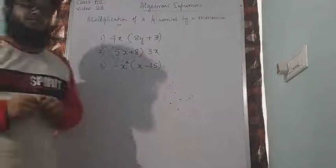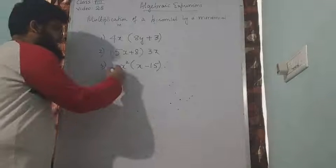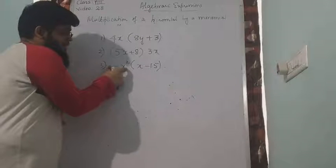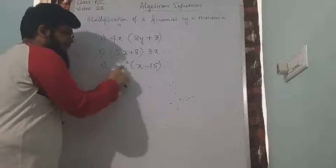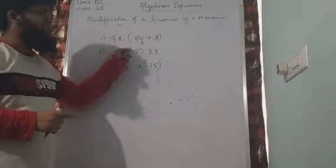Try to do these 3 problems as homework. For the last problem I will give you some hints. So minus x square into x will be minus x cube. When you multiply this minus x square into 15, be careful because minus into minus will become plus. So if you have any doubt, tell me I will do this problem. But two are very easy.